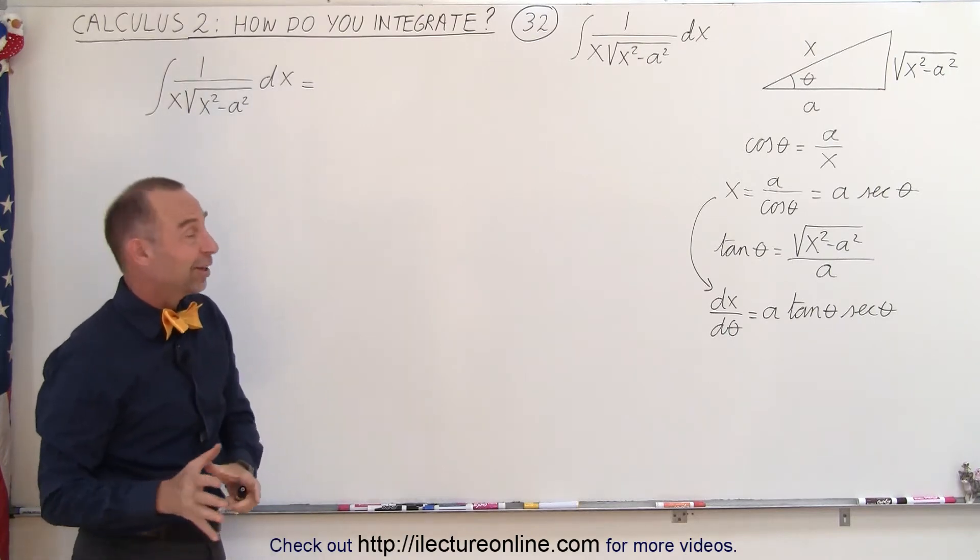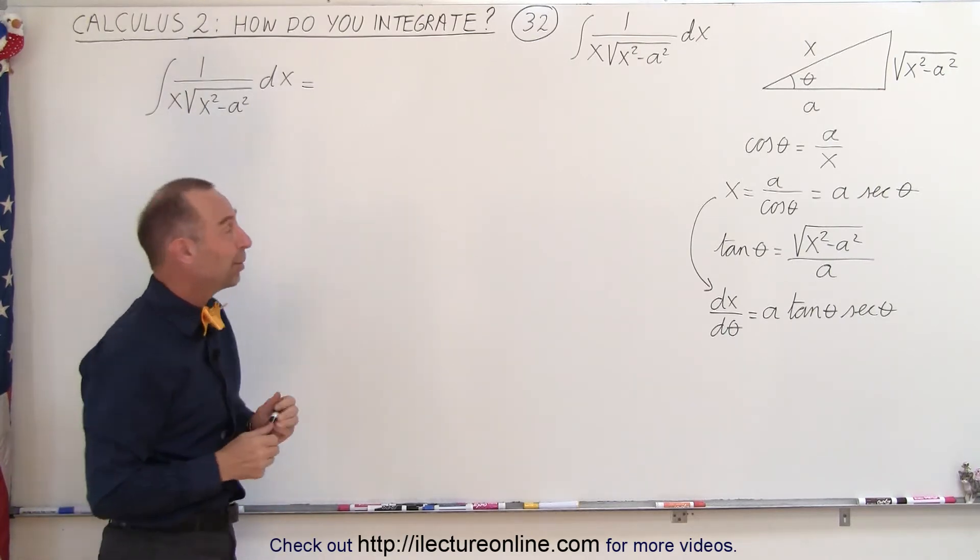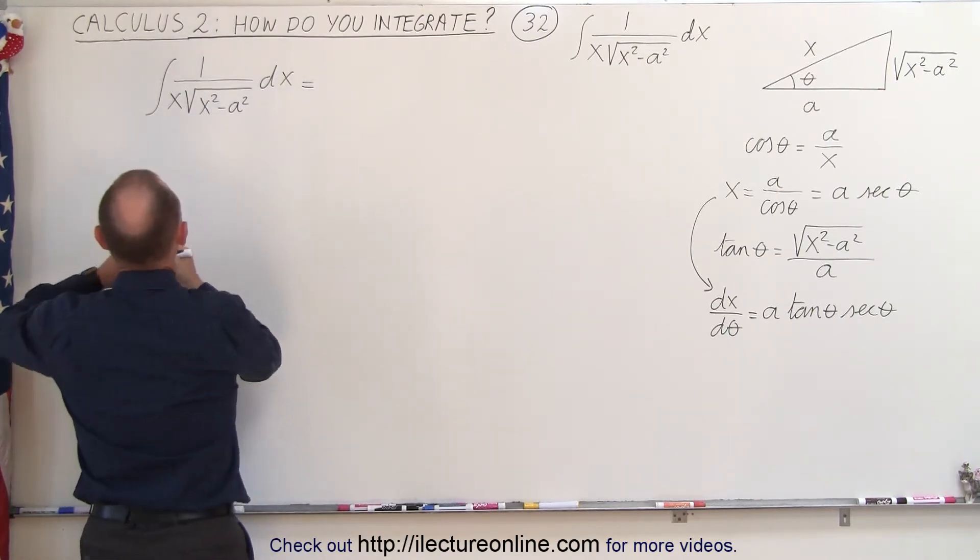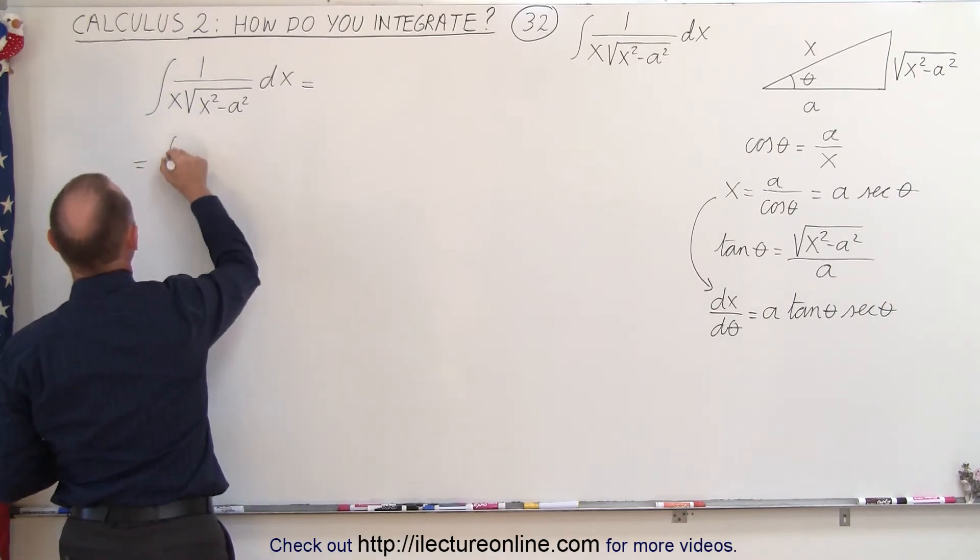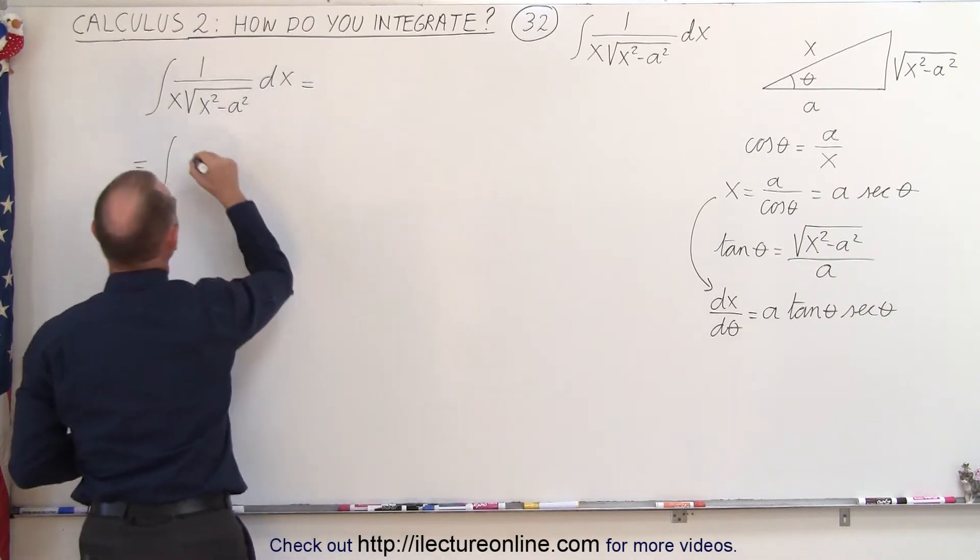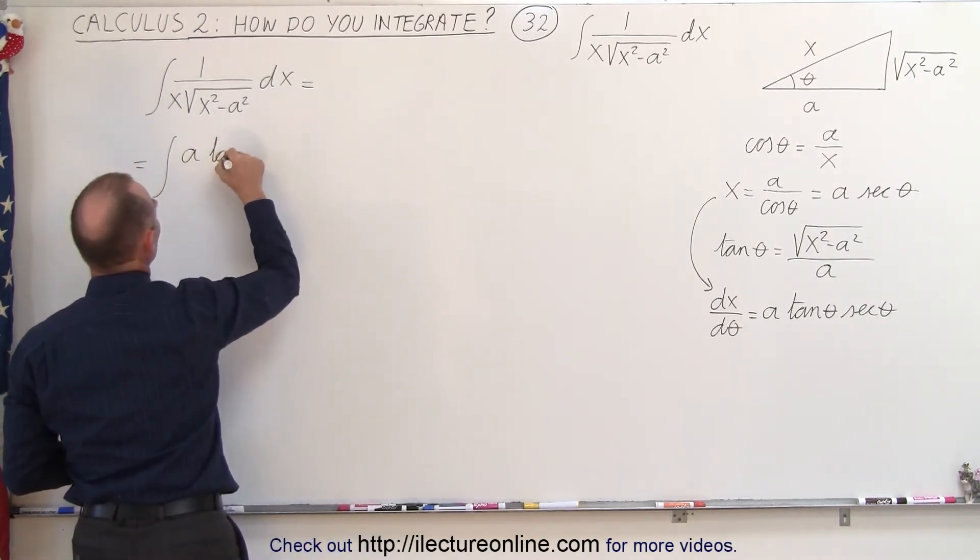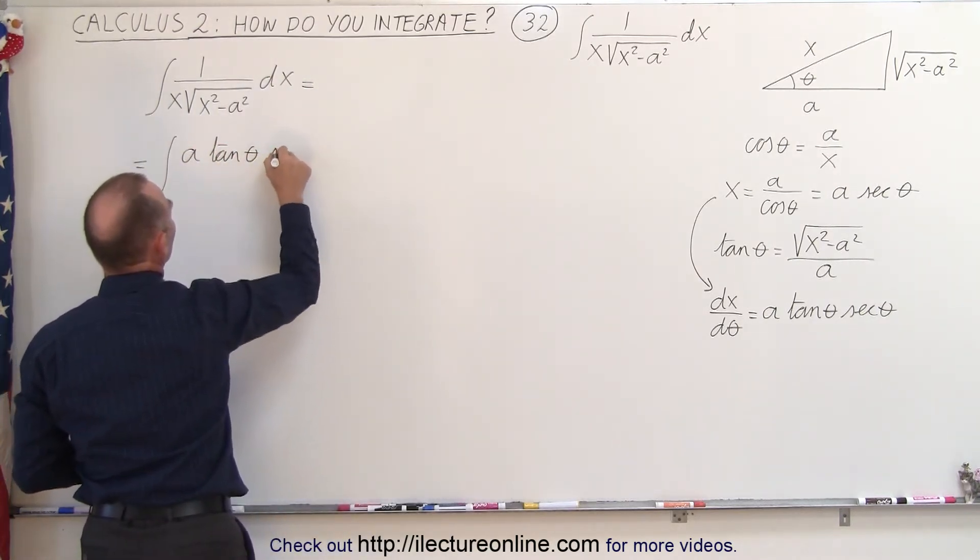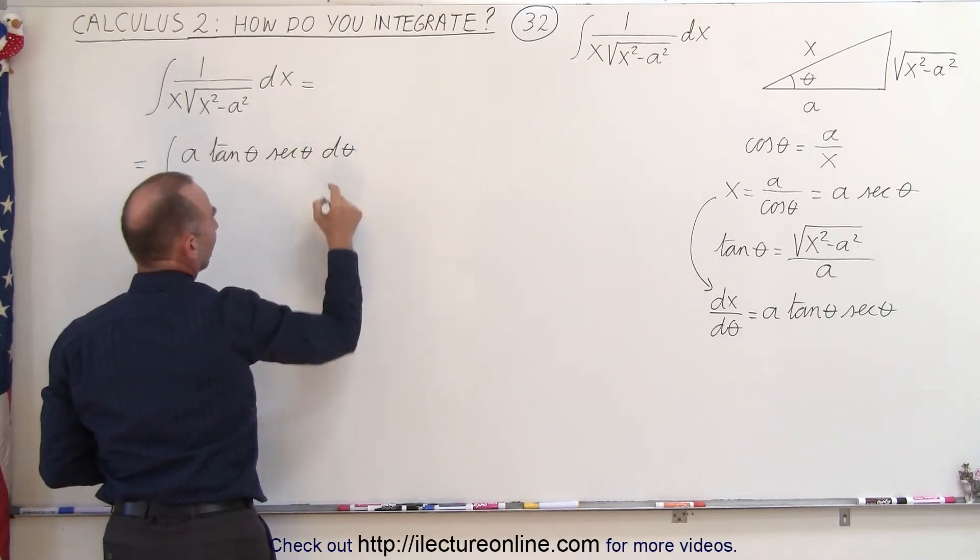And you'll be surprised that you end up with something actually quite simple when we do that. So this is equal to the integral of, we have a dx in the numerator, so that becomes a tangent of theta secant of theta times d theta,